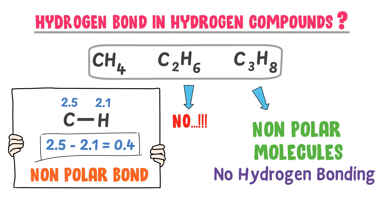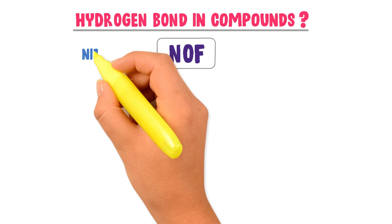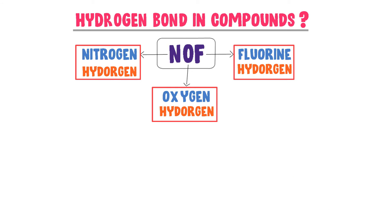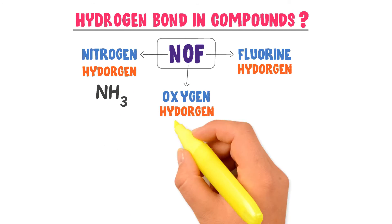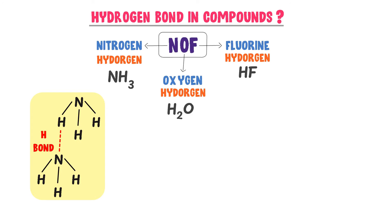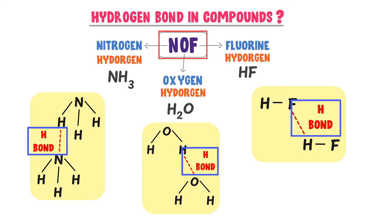Remember this mnemonic: NOF — nitrogen, oxygen, and fluorine. When hydrogen forms a covalent bond with these three elements, hydrogen bonding exists between their respective molecules. For example, hydrogen bonding exists in ammonia (NH₃), water (H₂O), and hydrogen fluoride (HF). Note down this mnemonic NOF — hydrogen bonding only exists in ammonia, water, and hydrogen fluoride.